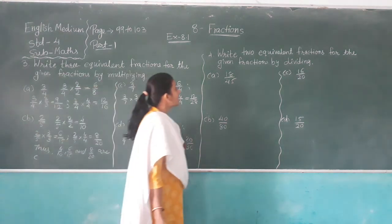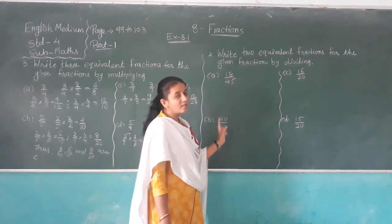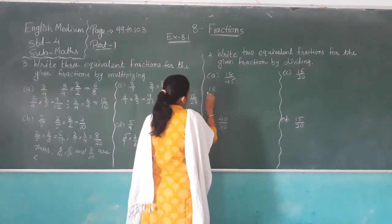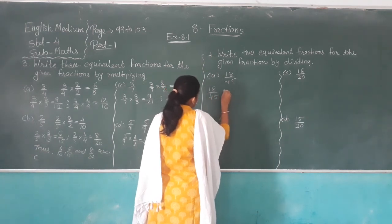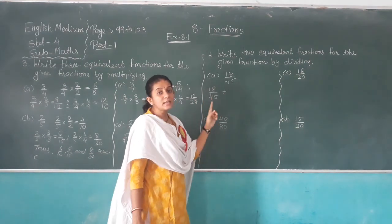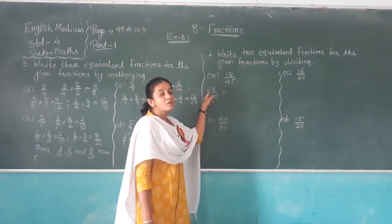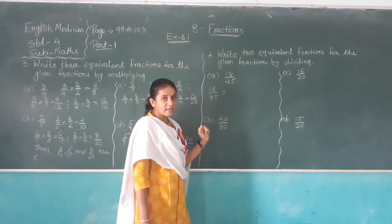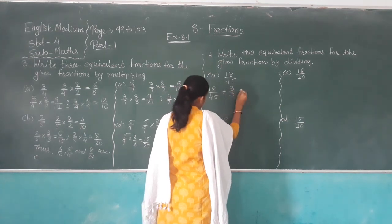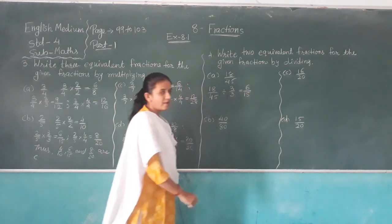Question number four: Write two equivalent fractions for the given fraction by dividing. Here, eighteen out of forty-five. First, we follow the rule of threes. Check if both digits are divisible by three: eight plus one is nine — possible. Four plus five is nine — also possible. So we try dividing by three: six threes are eighteen, and fifteen threes are forty-five.